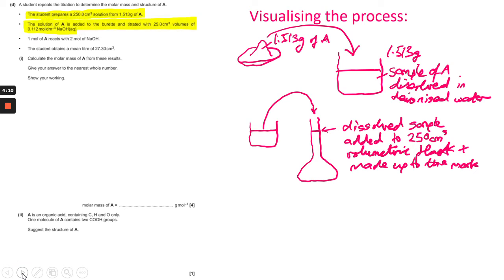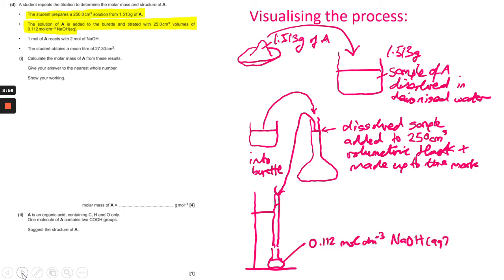So then it says the solution of A is added to the burette like that and it's titrated with 25 centimeter cubed volumes of 0.112 mole per decimeter cubed NaOH and that's what's in the conical flask at the bottom.